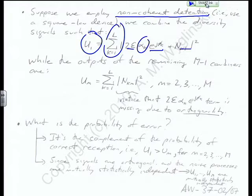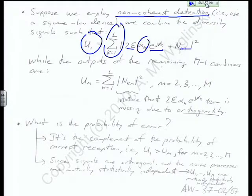What do we like calculating in digital communications? Probability of bit error. However, it's actually way easier if we calculate the probability of correct reception — the optimist approach — and then one minus that gives the probability of bit error.